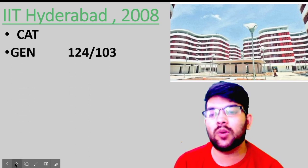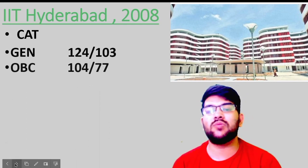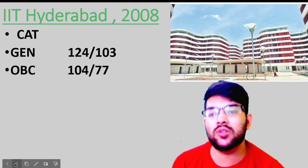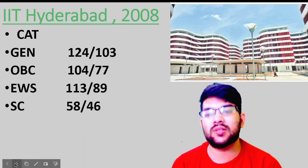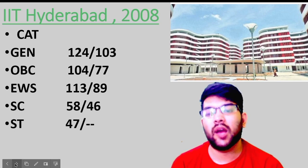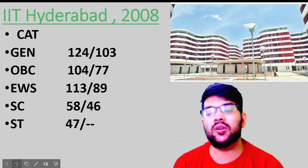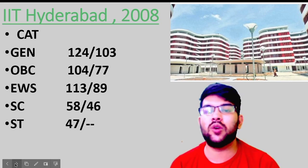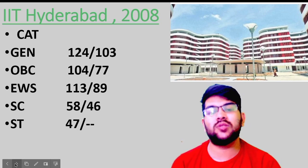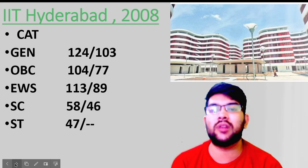For IIT Hyderabad — general category, 124 and 103 marks; OBC, 104 and 77 marks; EWS, 113 and 89 marks; for SC, 58 and 46 marks; and for ST, 47 marks. Here you can see the SC category female cutoff is low compared to male, because the female cutoff is available for the lowest possible branch.